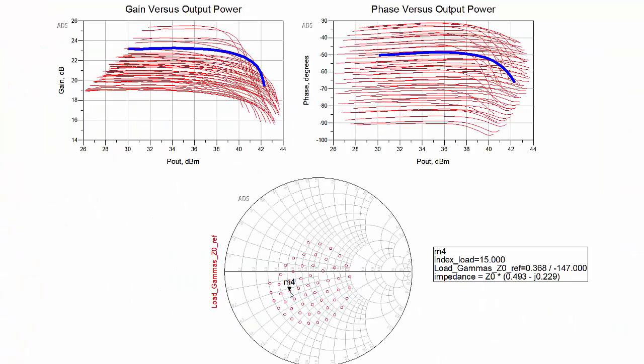The following explains the idea behind this technique. As the load is pulled and the one-tone source power is swept, you get different output power and phase distortion curves like these, where the x-axis is the output power.